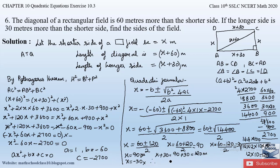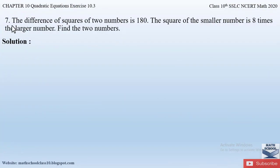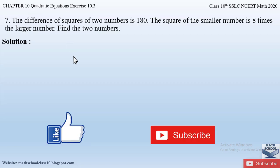Therefore, the shorter side of the rectangular field is 90 meters and the longer side is 120 meters. This is how we solve this problem. If you have any doubts, please comment below. In my next video I will be solving question number 7 from exercise 10.3, chapter 10, quadratic equations. Please like my video and subscribe to my channel. Thank you.